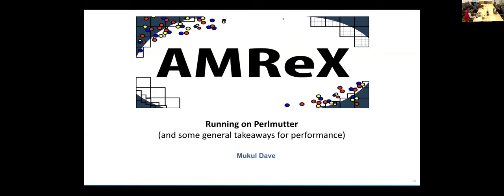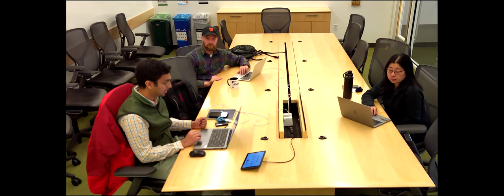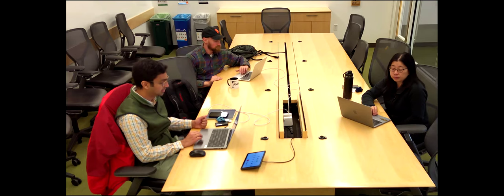So there is one answer from the Q&A, which maybe you or someone can answer. How does AMREX deal with mesh on a sphere? For example, the earth.